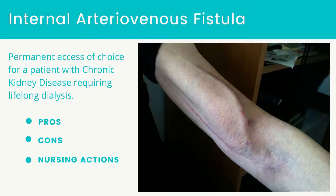In order to use the fistula, it must be mature before it can be used, because the engorged vein is punctured with a large bore needle for the dialysis procedure. If the access is not yet mature, a subclavian or femoral catheter, or an external arteriovenous shunt, can be used for dialysis while the fistula is developing.